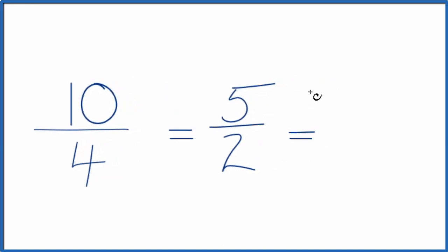2 goes into 5 two times with 1 left over. 2 times 2 is 4, and we have 5 here. So 1 left over, bring the 2 across, and 5 halves or 10 fourths, that's equal to the mixed number 2 and 1 half.